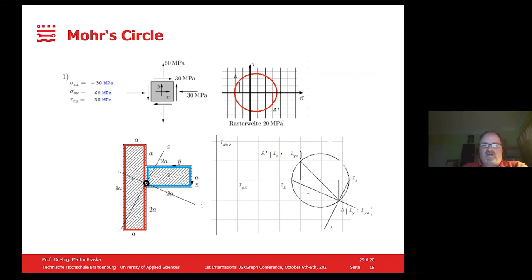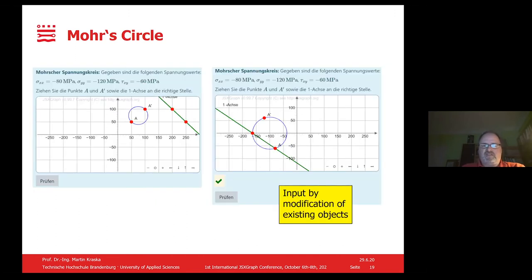Another example is Mohr's circle, which relates to the eigenvalue problem of second-order two-dimensional tensors, for instance strain or stress. You have stress components in a given coordinate system and you can compute, or by sketching, find out what the principal stresses and principal directions are. Same applies for moments of inertia of cross-sections of beams. A way to implement this is to provide the stress components and ask students to put the circle and line for the principal direction in the right spot. This can also be implemented by modifying existing objects.